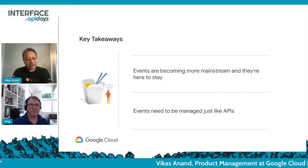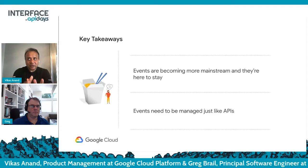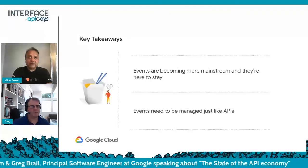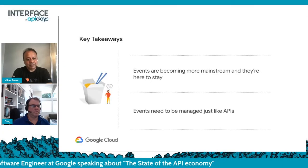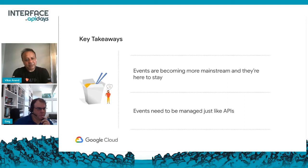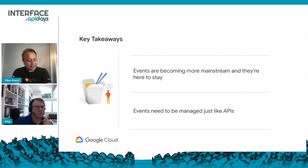The key takeaways we want you to have from today's session are really two things. Apigee is a market leader in the API management space, and we really know how to manage APIs. But we wanted to talk about the synergy between events, event streams, and APIs. First: events are becoming more mainstream and are here to stay. Second: as they proliferate, they need to be managed the same way you manage your APIs.